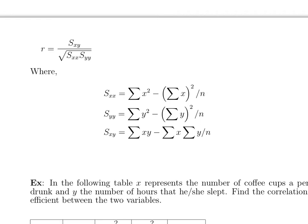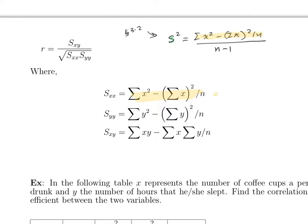Now let's see how to find the correlation. The formula requires three quantities: S_xy, S_xx, and S_yy. These formulas look intimidating but you have done this before — from section 3.2, the variance formula was the sum of x-squared minus the sum of x squared over n, divided by n minus 1.